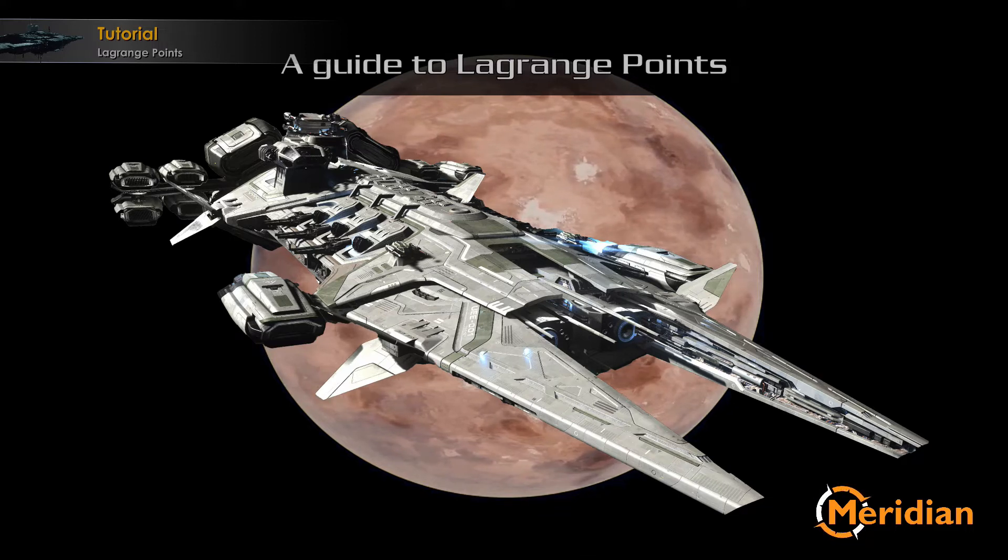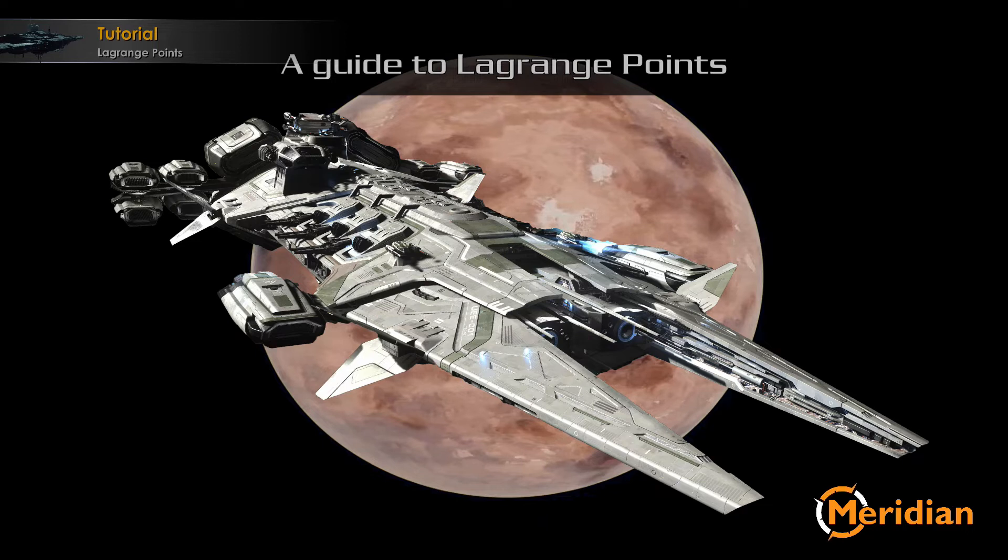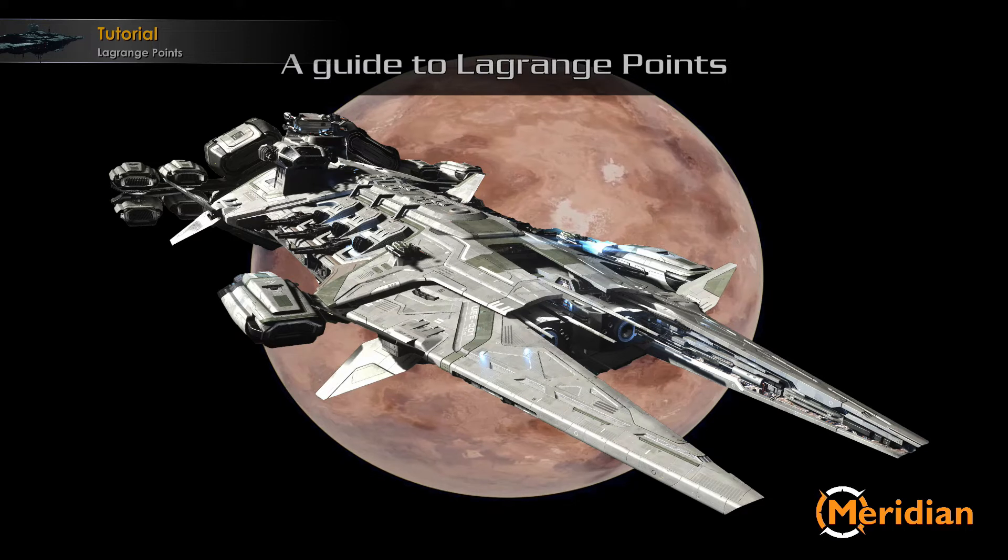At these locations all forces, gravitational and centrifugal, are balanced out. Smaller objects stay there in relation to bodies with large masses like planets. They usually contain asteroid fields, nebulas, and in Star Citizen, they also host our mining stations.